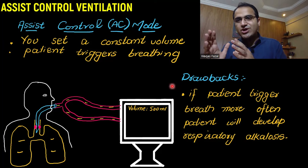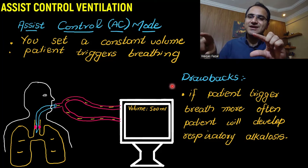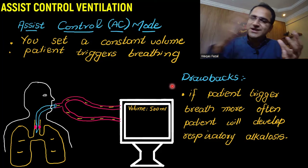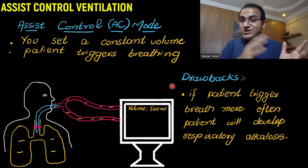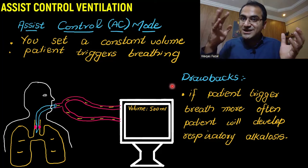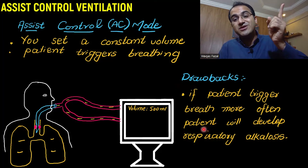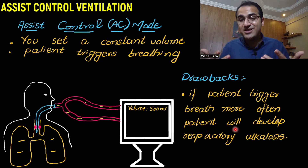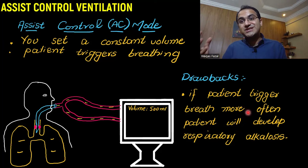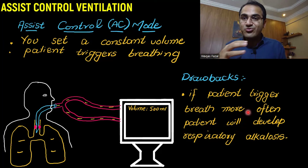The drawback of assist control mode: if the patient tries to breathe more rapidly, triggering the ventilator again and again, the ventilator will give more breaths each time. This results in hyperventilation and respiratory alkalosis. So the drawback is that if the patient triggers too many breaths, the ventilator will deliver all of them, leading to hyperventilation and respiratory alkalosis.